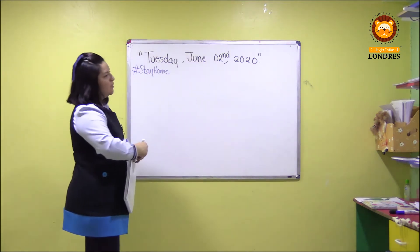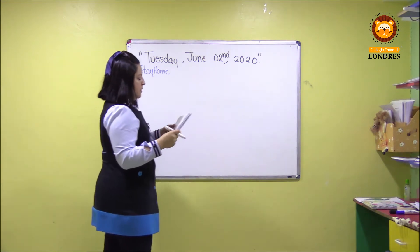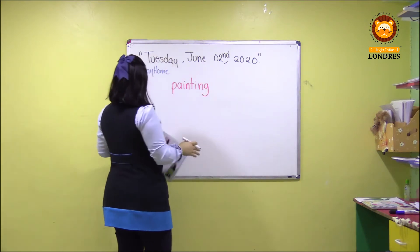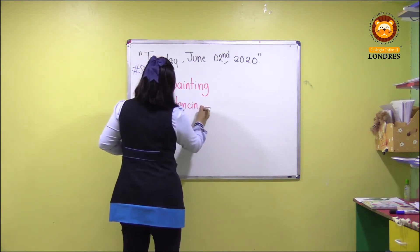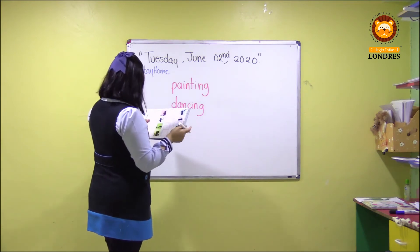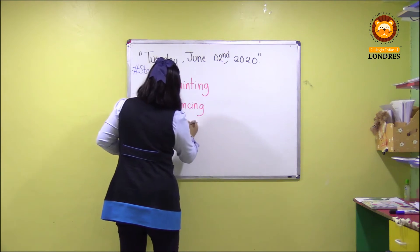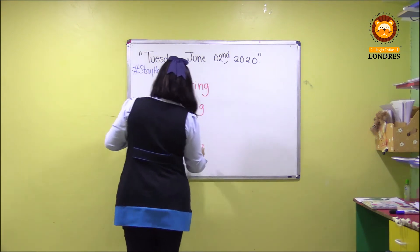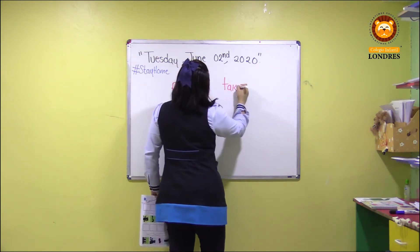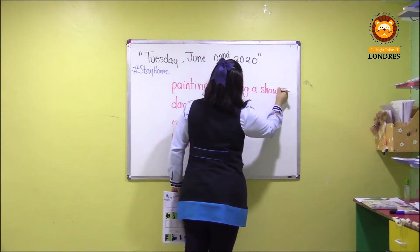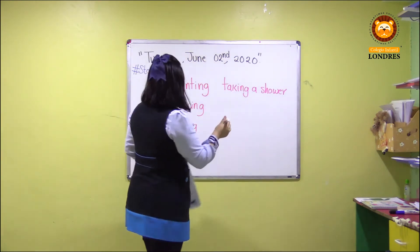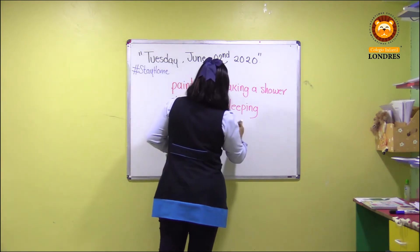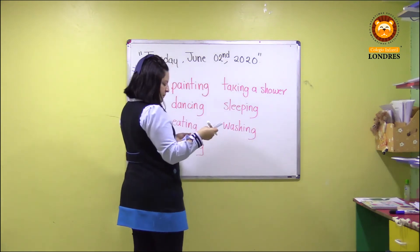Ahora voy a anotar los verbos para que los practiquen y no se les olvide. Tenemos: painting, dancing, eating, brushing, taking a shower, sleeping, washing, and watching.